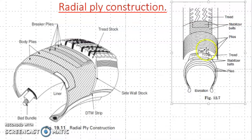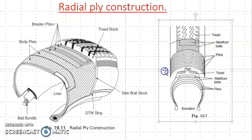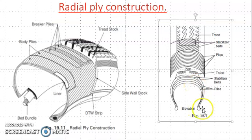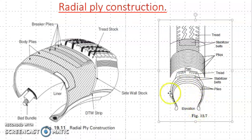Apart from that, we are using stabilizer belts. In previous constructions, the plies are placed one over the other in different directions. But here they are radial — one end is at the bead and the second end is at the other side. That's why the arrangement is called radial ply construction.